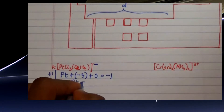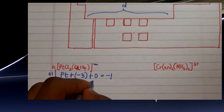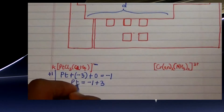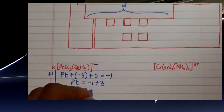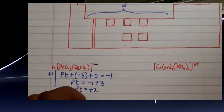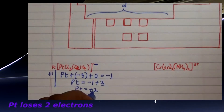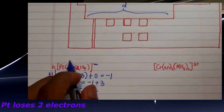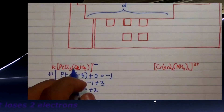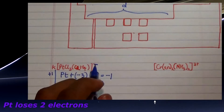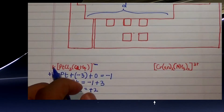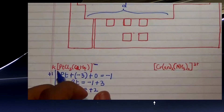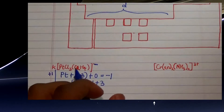Moving the terms over, platinum equals negative one plus three, which gives us platinum at positive two. So platinum is +2 in this complex — it loses two electrons — giving an overall charge of negative one, which then interacts ionically with potassium to form a salt.